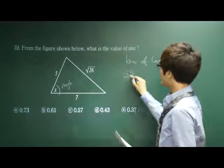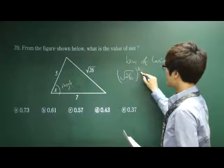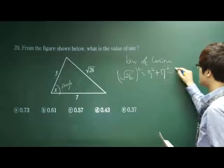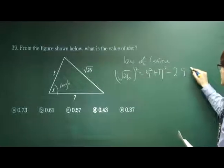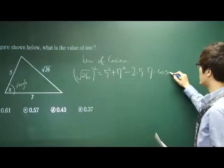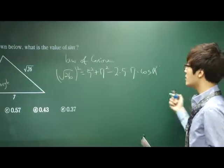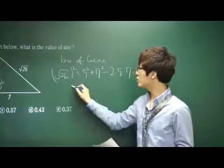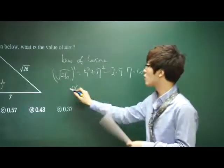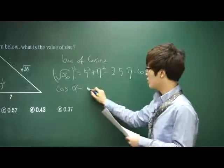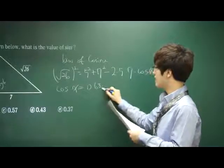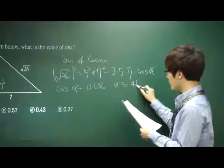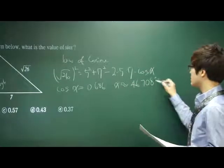It was that the square root of twenty-six squared is equal to five squared plus seven squared minus two times five times seven times cosine of angle x. We don't know this, x. So if you put this in your calculator and calculate this accordingly, you will get x is equal to, cosine x is equal to 0.686. Therefore, x is approximately equal to 46.708 degrees.